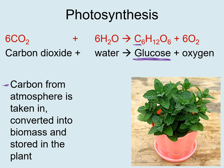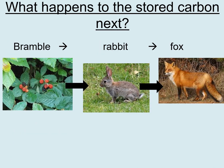Carbon from the atmosphere is taken in and converted into biomass and stored in the plant — so all the bits and pieces that plants are made out of, much of that is carbon. Here I've drawn a simple food chain: a bramble, this bushy plant, is photosynthesizing, taking carbon in from the environment to produce its biomass.